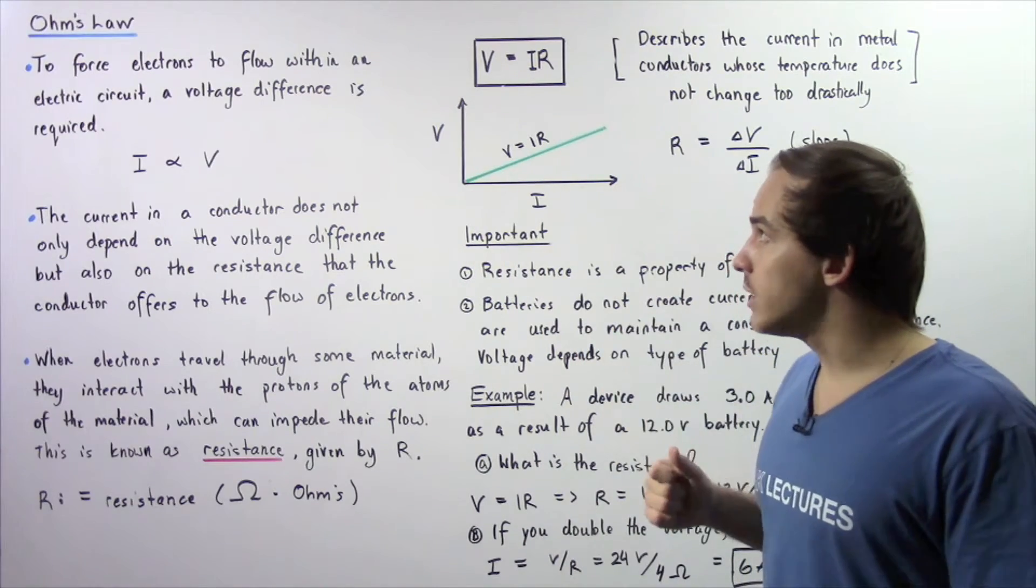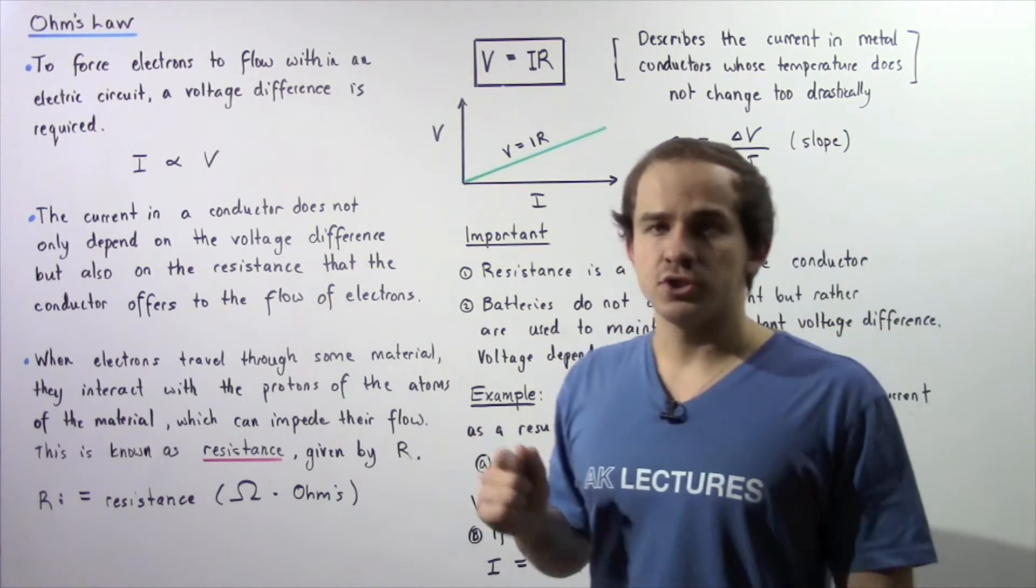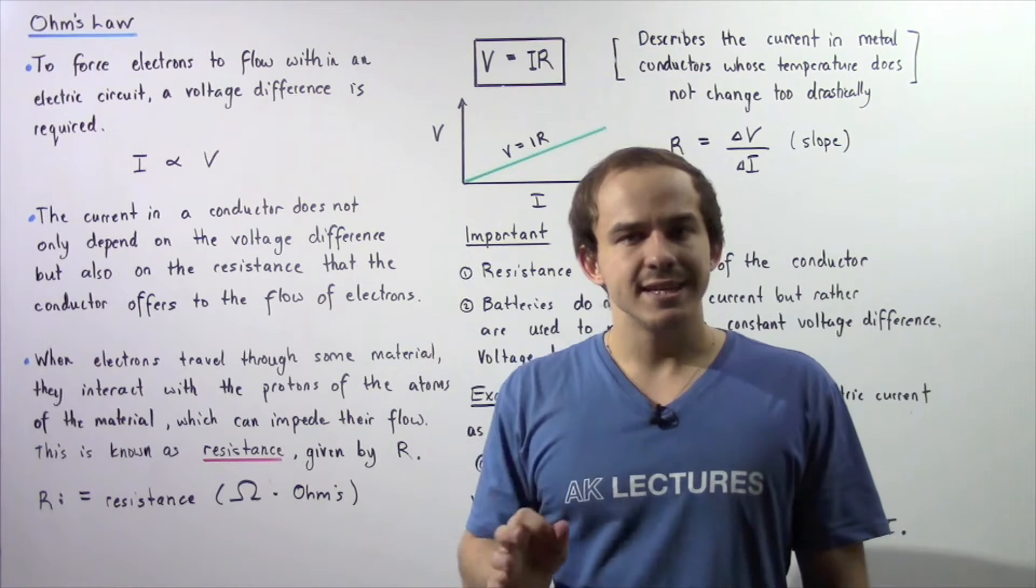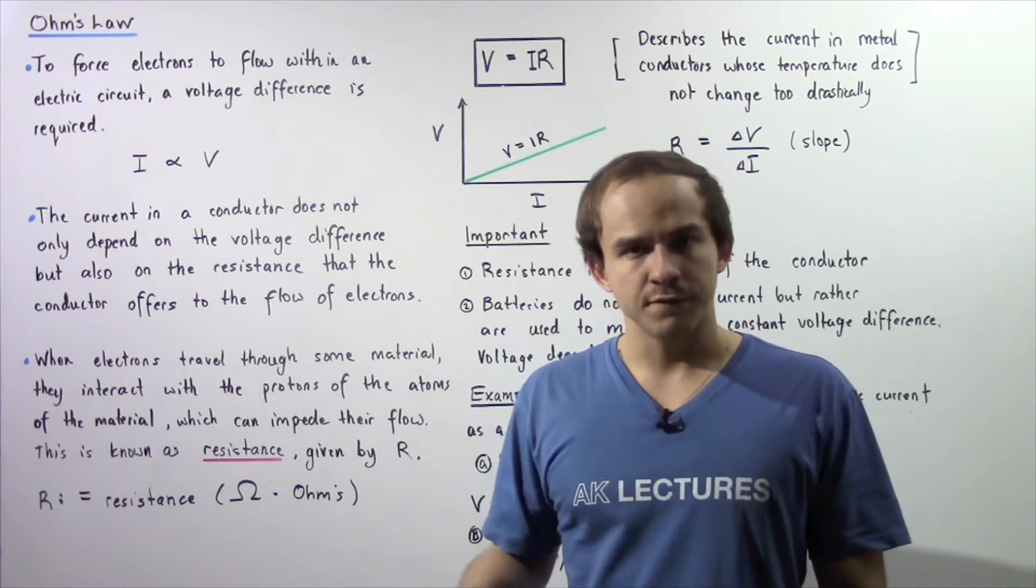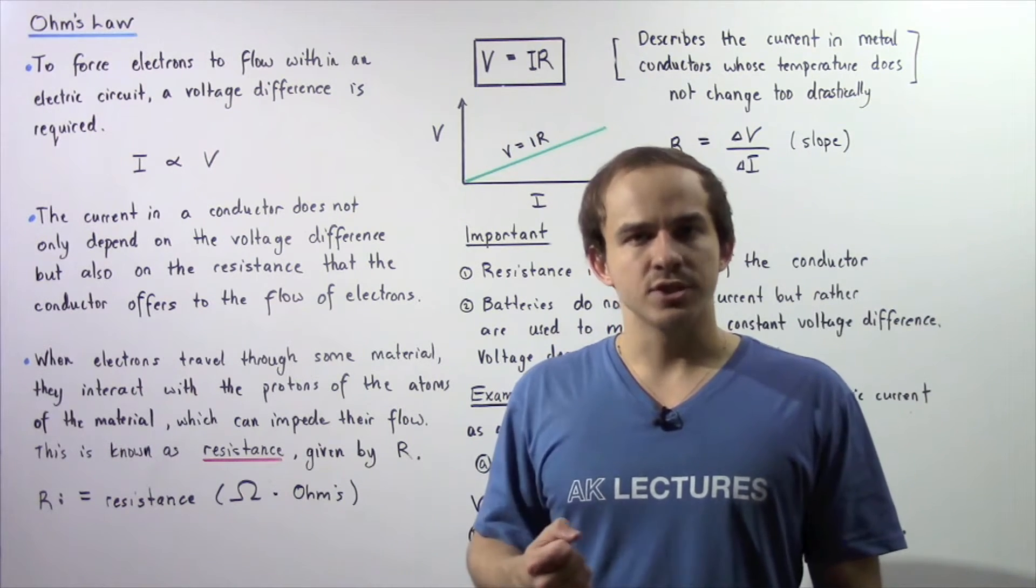Electrons flow from a lower potential to a higher potential within a closed electric circuit. So once again, to force electrons to flow within an electric circuit, there must exist a voltage difference, an electric potential difference within that electric circuit.